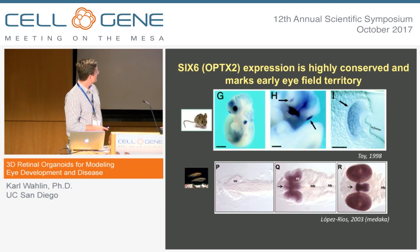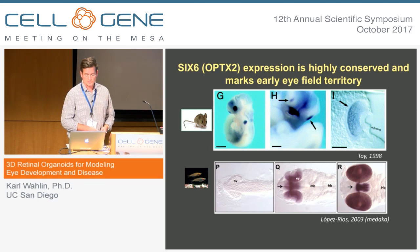The reporter we chose is the SIX6 gene — a very early eye field gene that is evolutionarily conserved, as seen in mice and fish. It's found in the optic structures, as well as the hypothalamus and pituitary, but for our purposes it's very well suited.